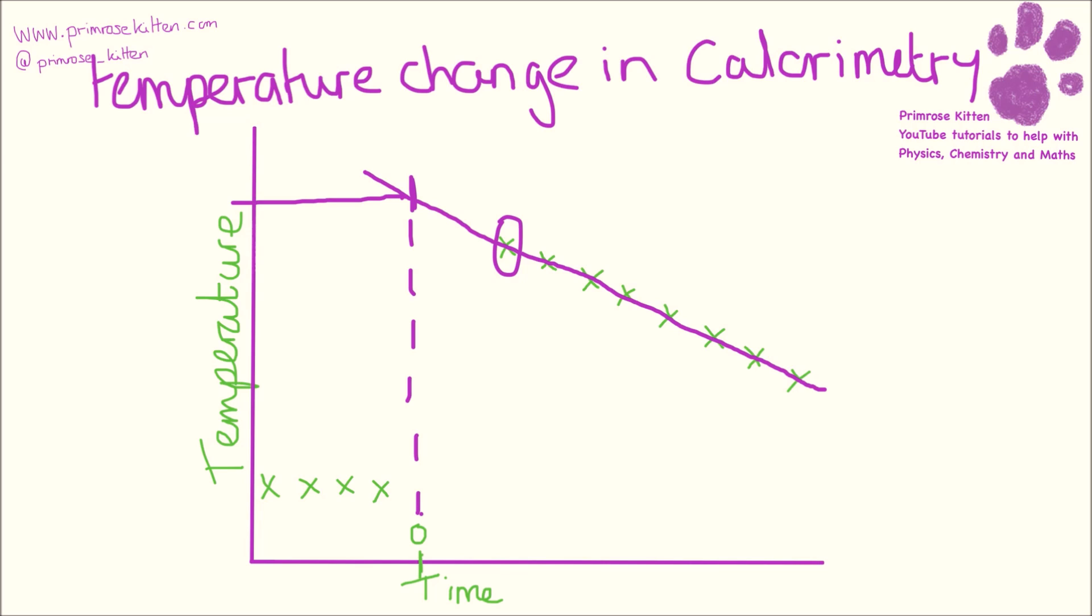So if you get a graph like this, if you do A-level chemistry, you need to extrapolate the graph backwards to find what the temperature was straight away as soon as the reaction started.